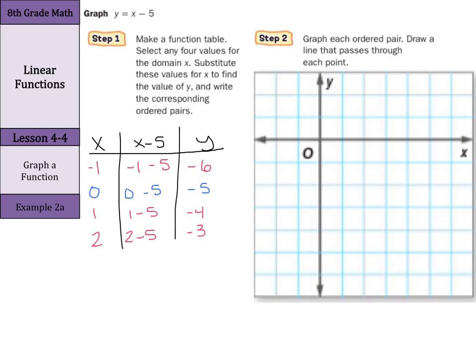And now we can graph these ordered pairs. So we'll have negative 1, negative 6. So negative 1 and then 1, 2, 3, 4, 5, 6, that would be negative 1, negative 6 right here. And then as for 0, negative 5, there's 0. And 1, 2, 3, 4 down. So 1, negative 4. And then lastly we would have 2, negative 3. 1, 2, 3. And I have my ordered pairs graphed. Draw a line that passes through each point. Very neatly draw a line up through there. And that is the graph y = x - 5.